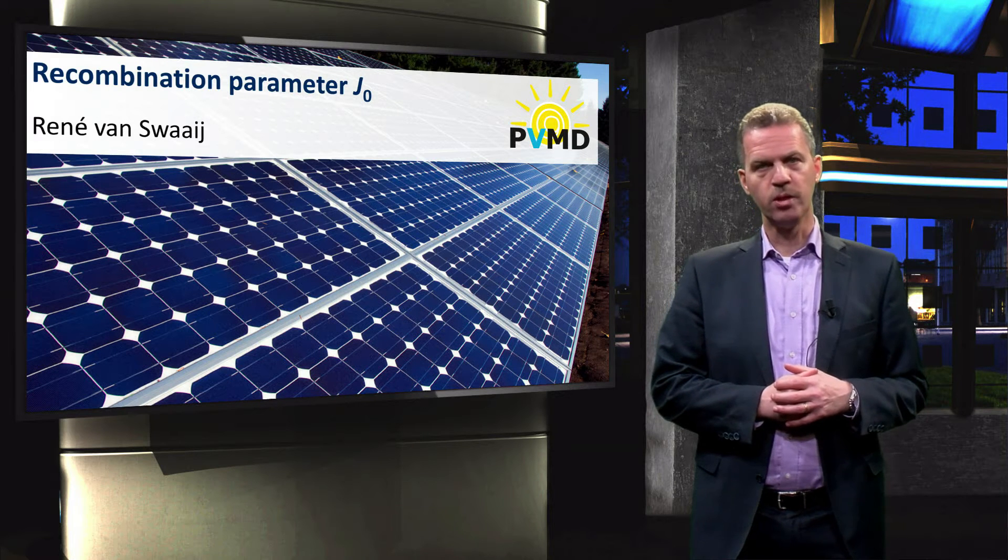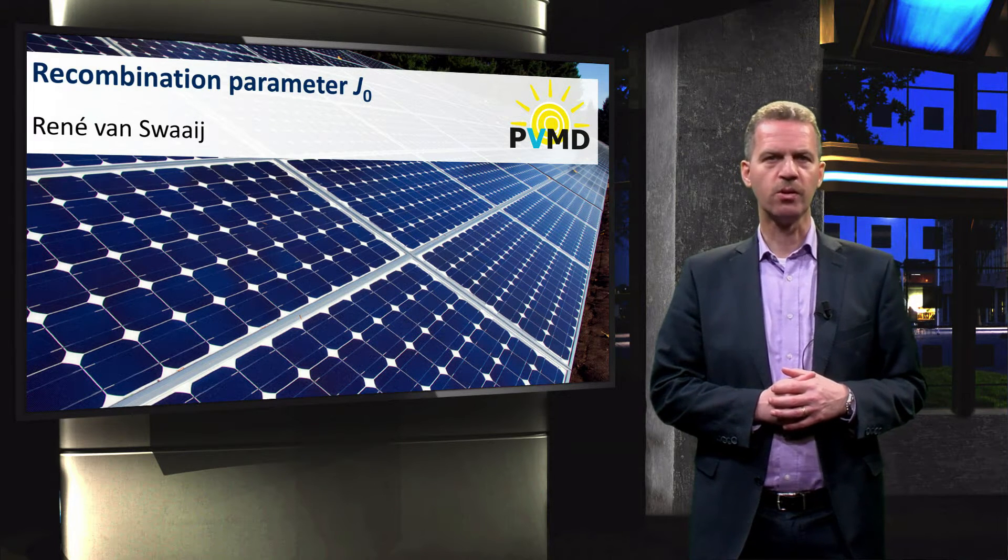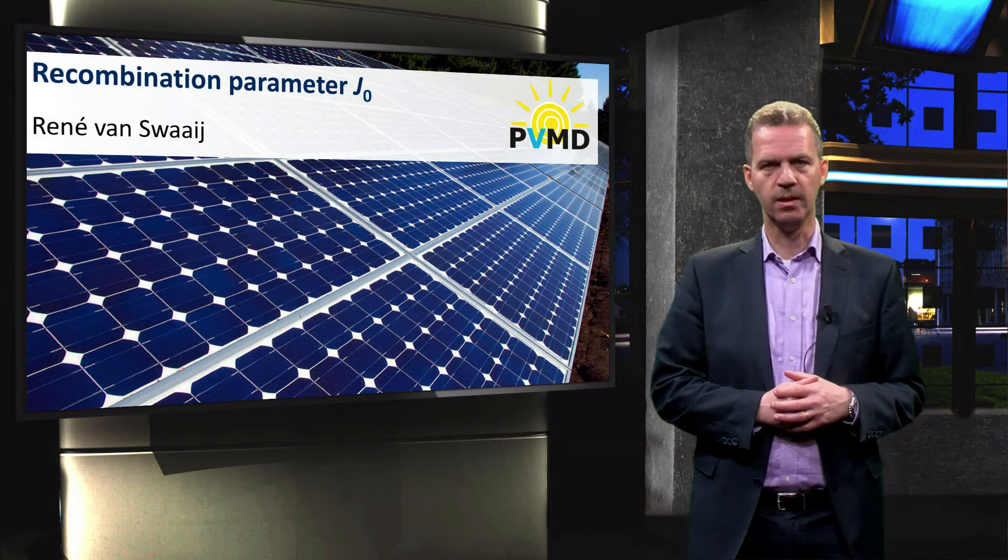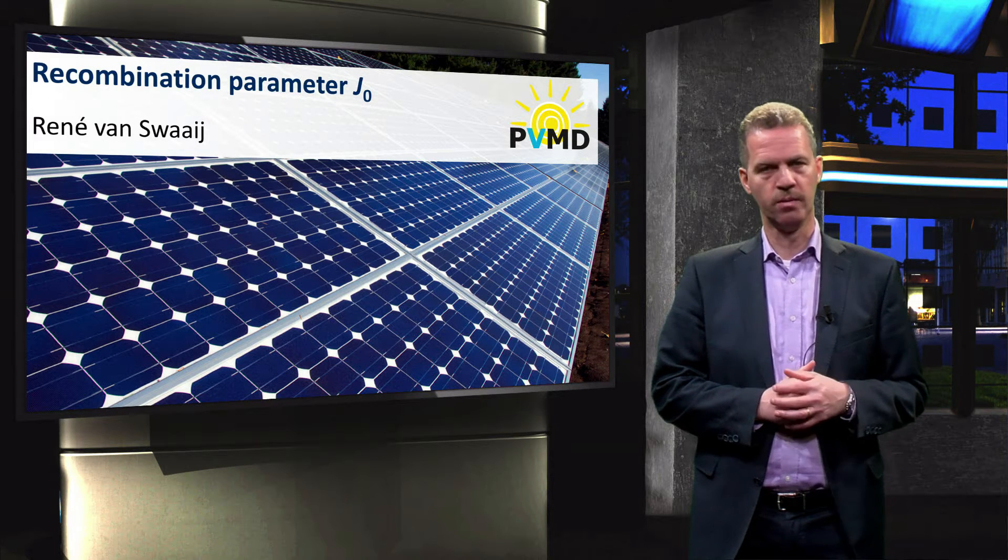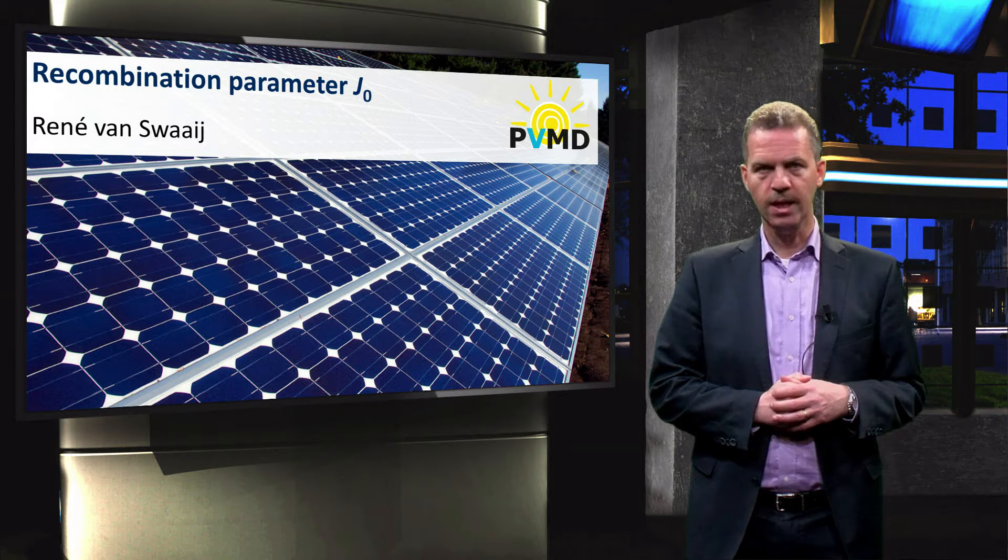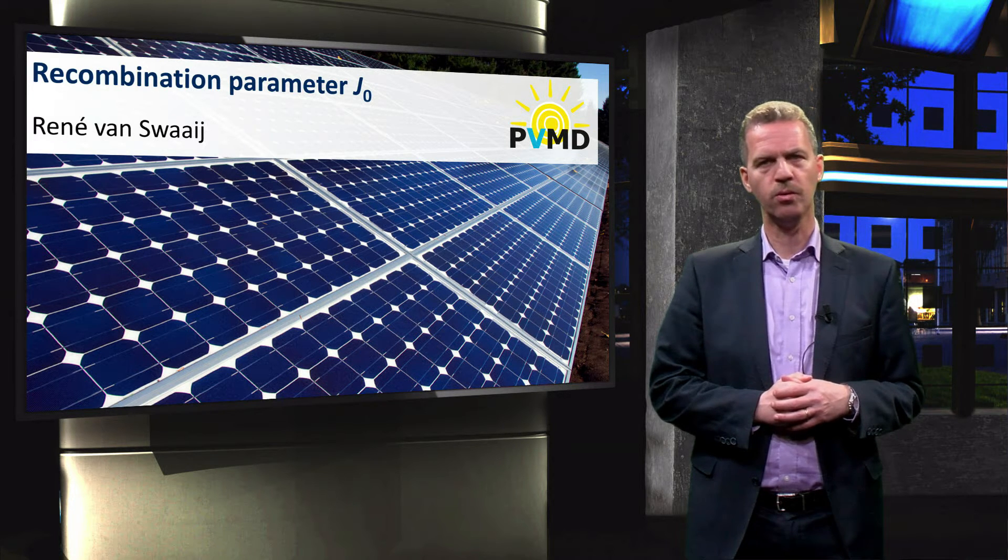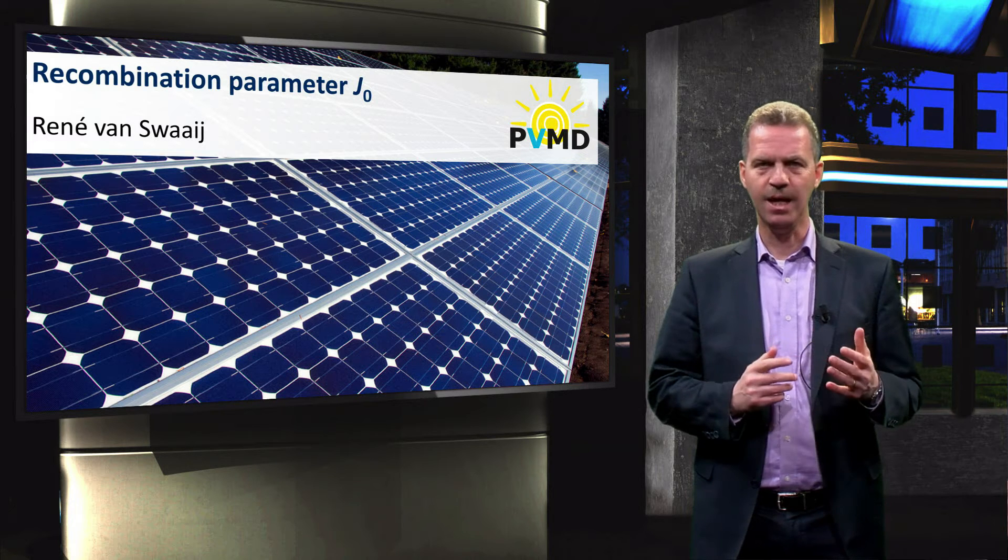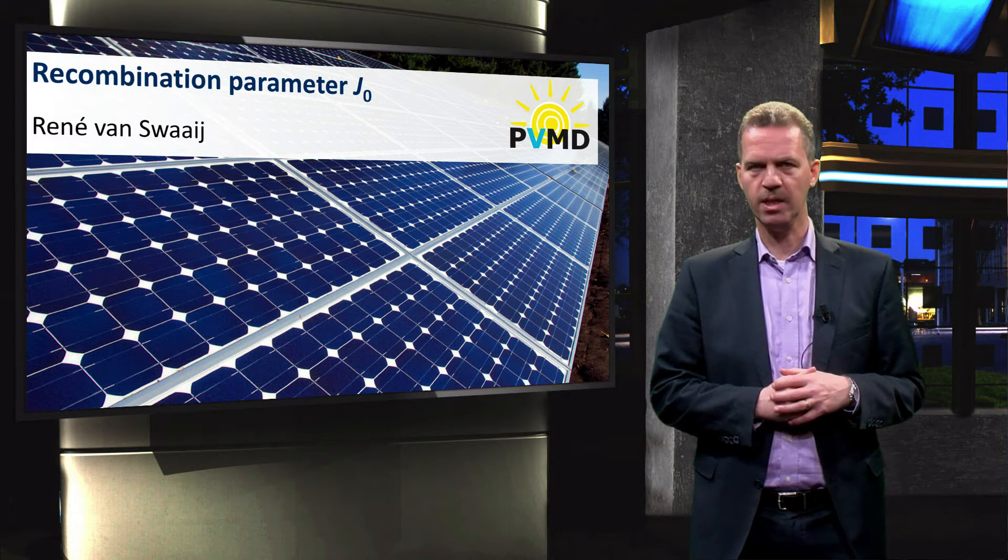In this video we will introduce a parameter that is often used to characterize the recombination in a solar cell, J0. We know this parameter as the saturation current density in the ideal diode equation or the Shockley equation, and here we will look at another interpretation.